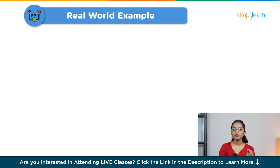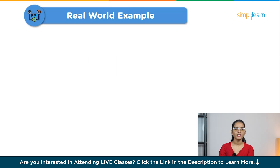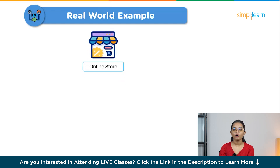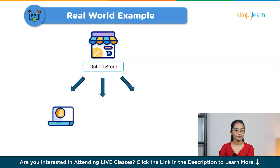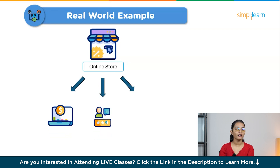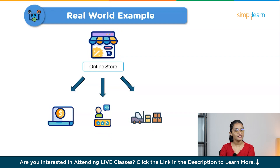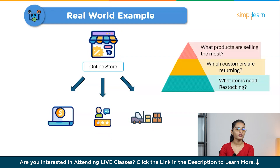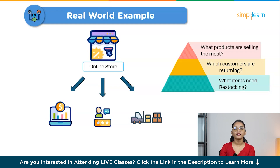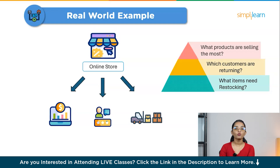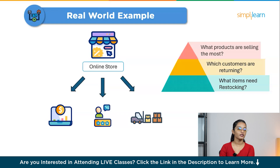To help you understand ETL better, let's look at a real-world example. Imagine you're running an online store that sells clothes. You have data coming from multiple sources: sales data from your website, customer reviews from social media, and inventory details from your warehouse system. You want to analyze this data to figure out what products are selling the most, which customers are returning, and what items need restocking.